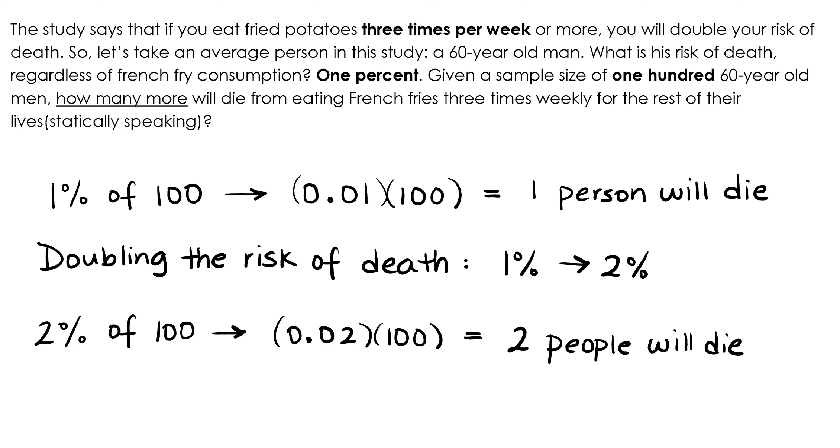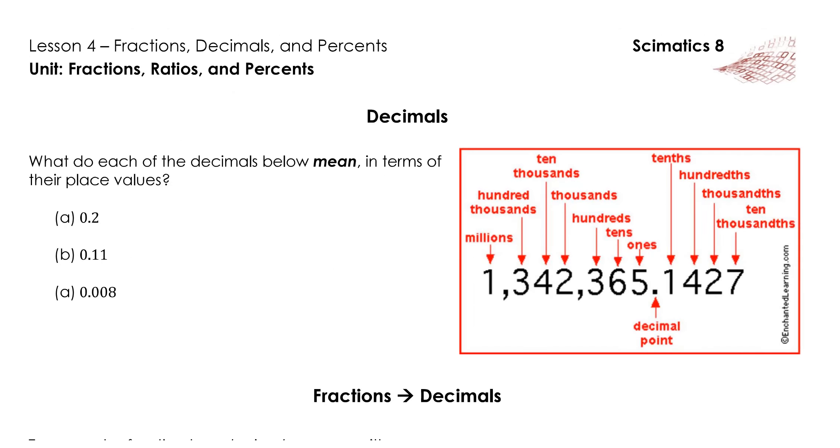Sometimes we encounter statistics and other information in the form of fractions, but other times we get them in the form of a percent or even a decimal. So computational fluency in converting between these three ways of expressing the same value is really important. We'll start today with a recap of important concepts from Math 7 with respect to decimals, fractions, and percents, starting with a recap on what the decimal place value system really means.